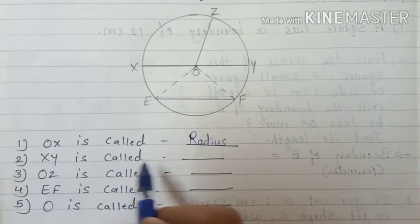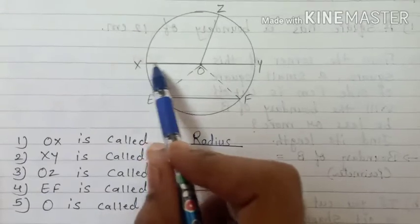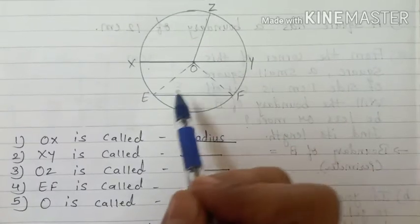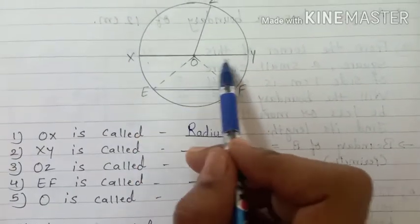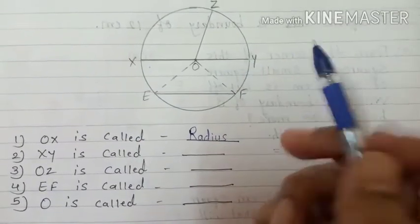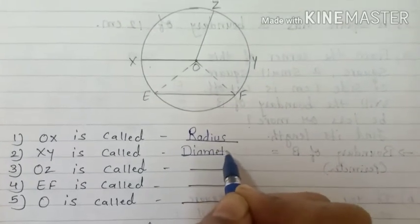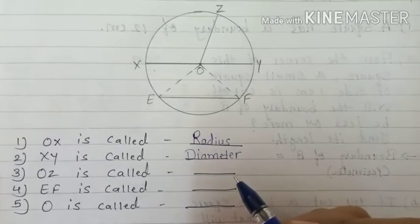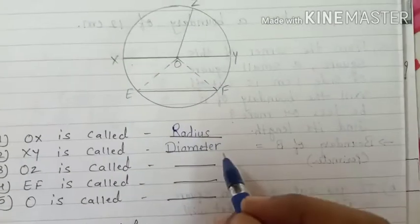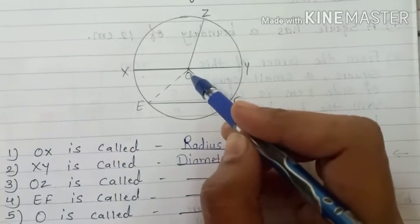Next one: XY is called dash. XY is the chord which passes from the center - that is called the diameter.